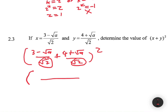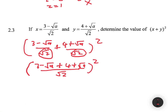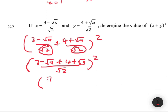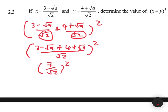So we get square root of 2 on the denominator, and on the numerator we have 3 minus square root of a plus 4 plus square root of a, all squared. Then 3 plus 4 gives 7, and minus square root of a plus square root of a cancels to 0, leaving 7 over square root of 2, all squared. So 7 squared is 49 and square root of 2 squared is 2, giving us 49 over 2.